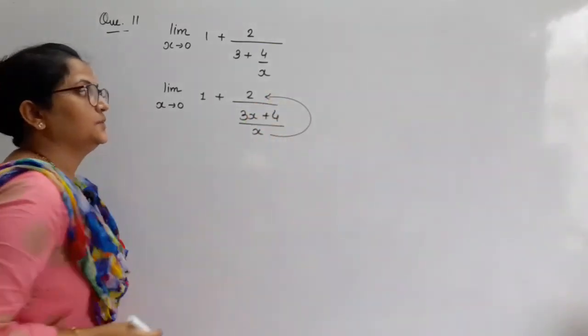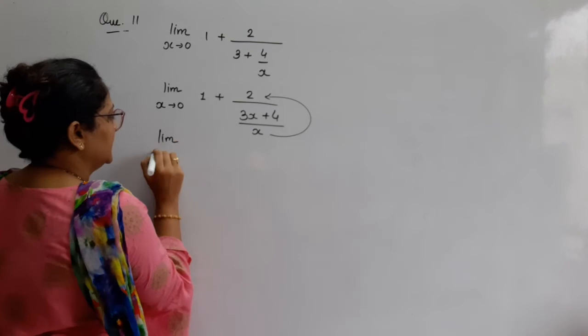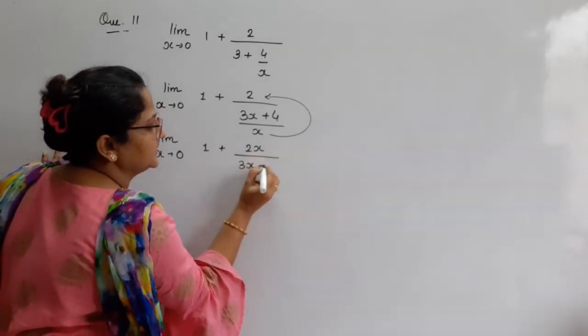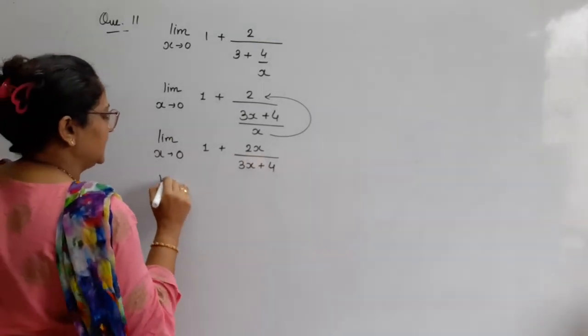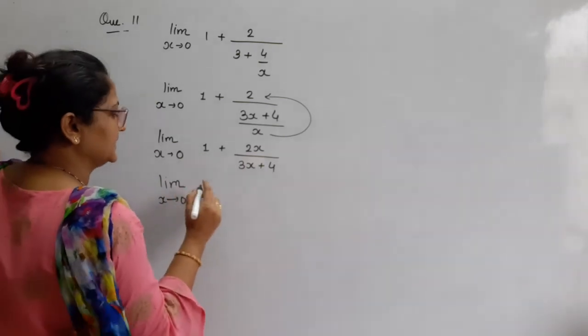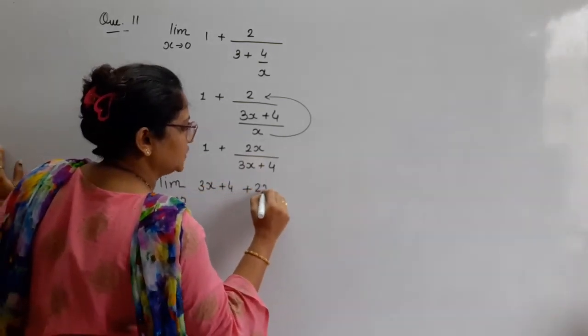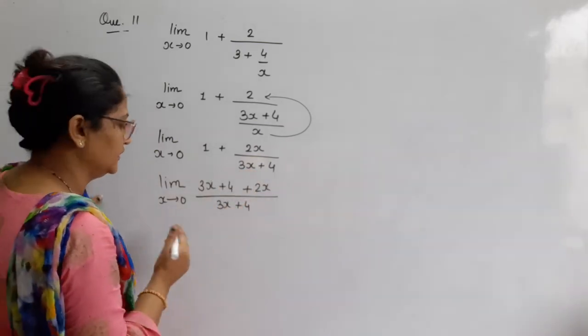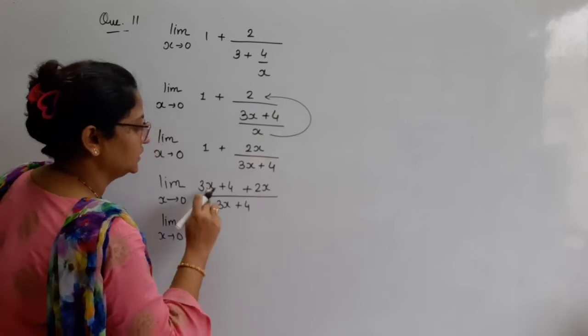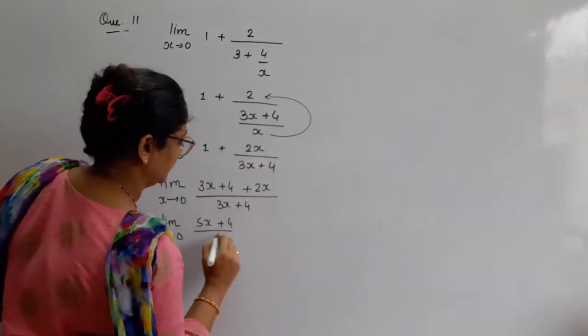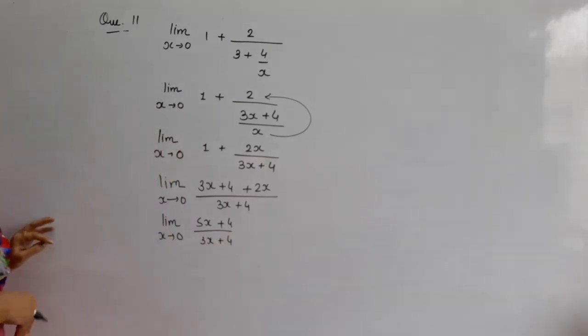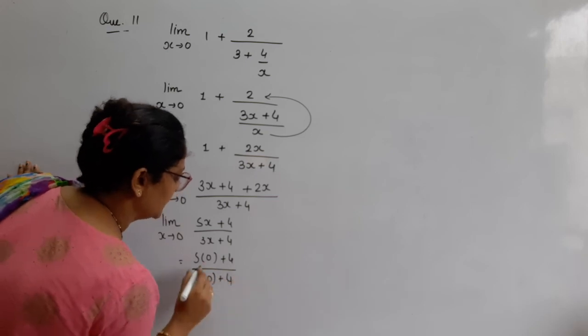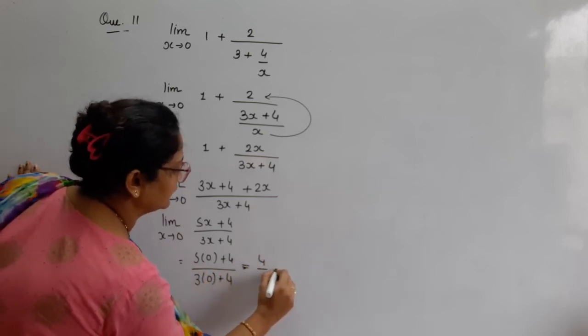So limit x tends to 0. 1 plus 2x upon 3x plus 2x. 5x plus 4. 5x plus 4. But see, x ki value 0 hai. 5, 0 plus 4. 3, 0 plus 4. This will be 0, 0. Cancel. 4 by 4. Answer is 1.